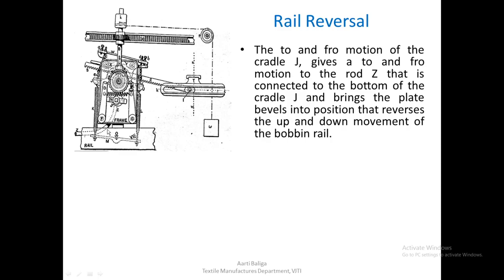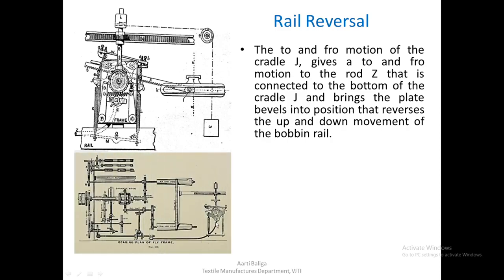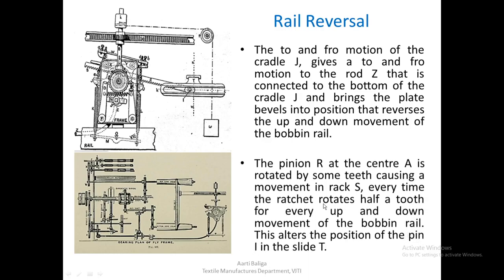Rod Z is further connected to the plate bevels, and the to-and-fro motion of rod Z will bring either of the plate bevels into position, thereby bringing about a reversal in the bobbin rail via the train of wheels. The pinion R at center A was engaged with rack S, and R also gets some rotation as soon as the ratchet turns half a tooth.